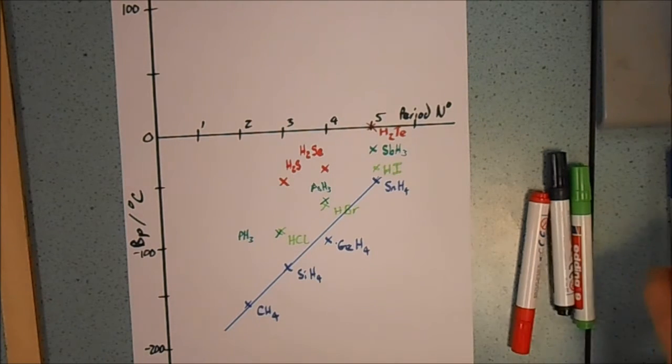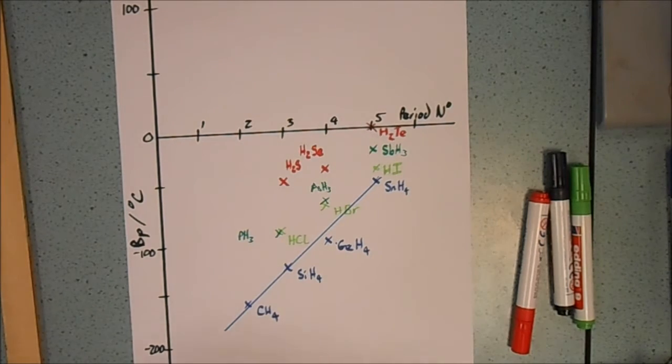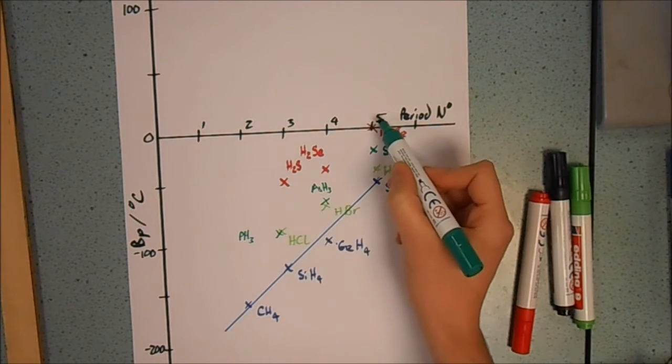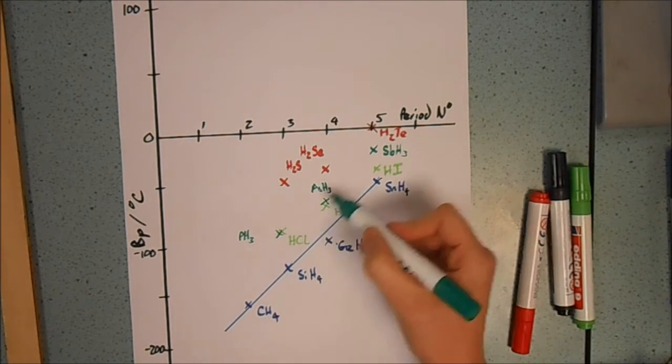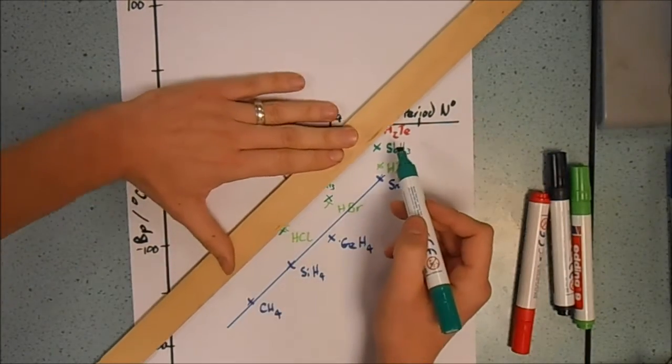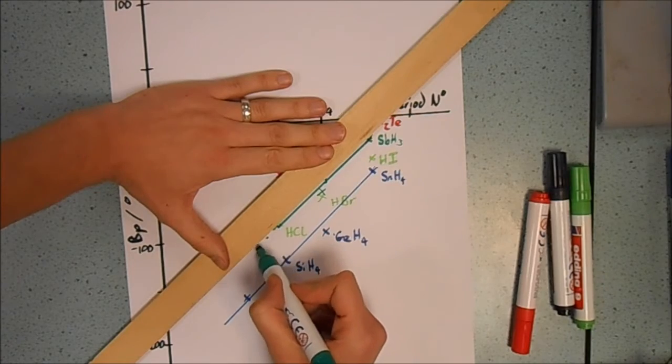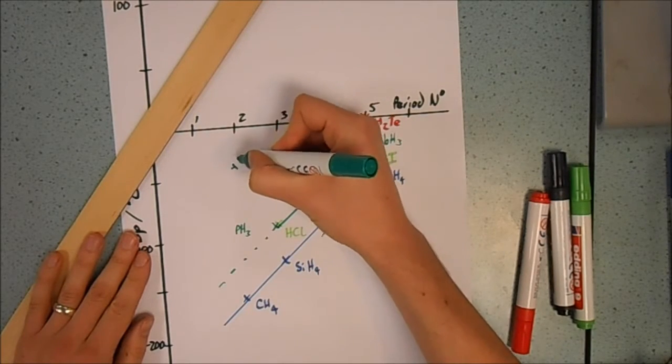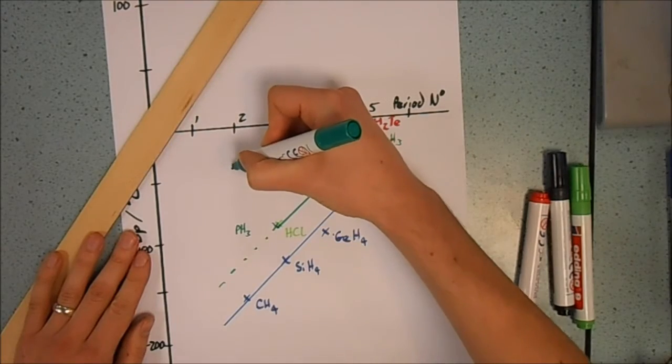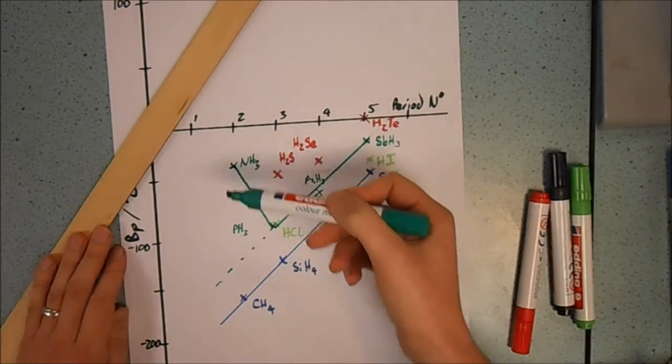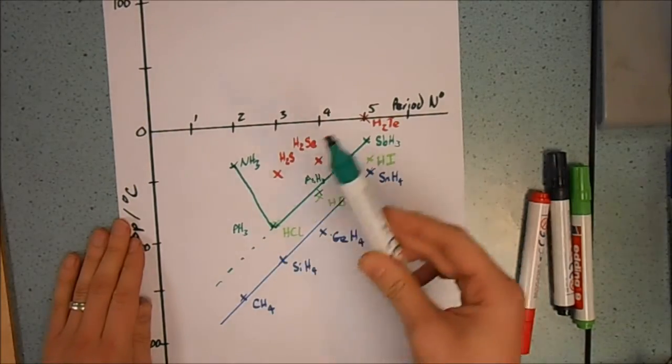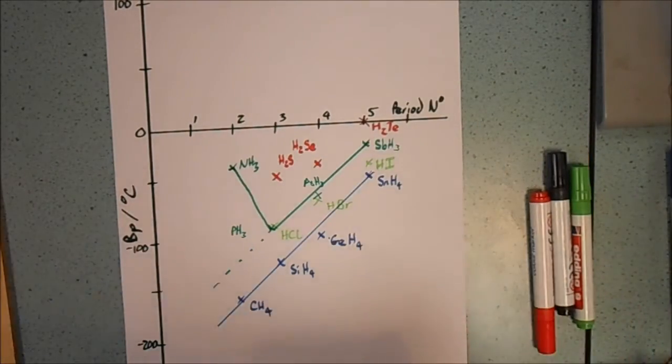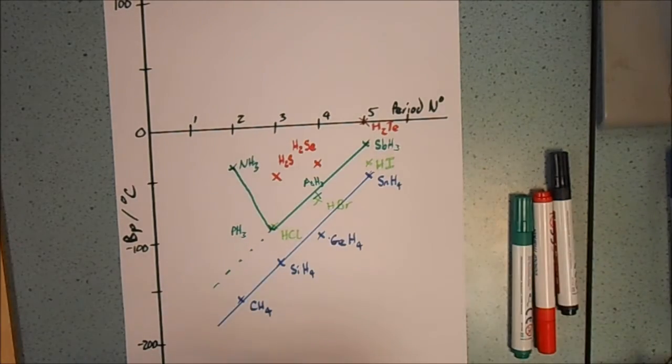So the problem comes when we look at the other groups. That was group four. We would expect group five to behave the same, but it doesn't. Here we have the three in group five. We would expect, if we extrapolated now, that we would find the next one down here. But actually, in reality, NH3, which is ammonia, has a boiling point more about here. So this is another example of where we have something bonded to a hydrogen where it's not following the expected pattern. We have a boiling point which is much higher.